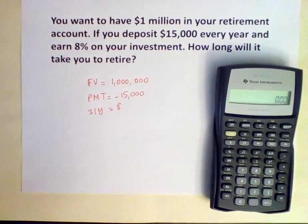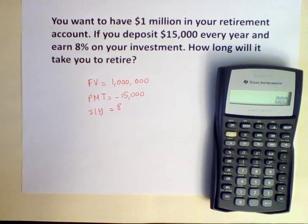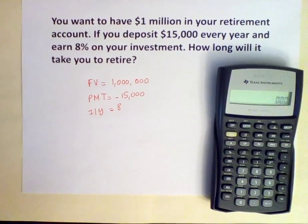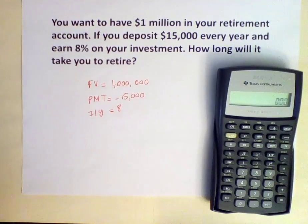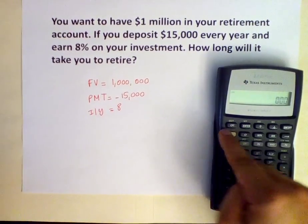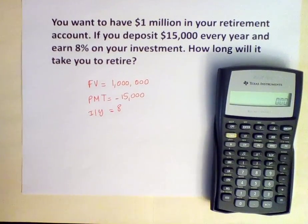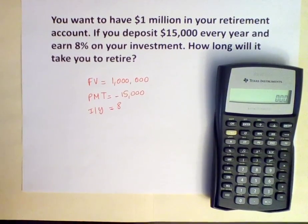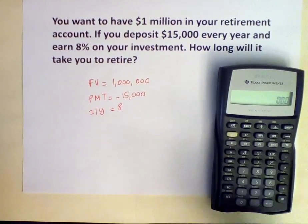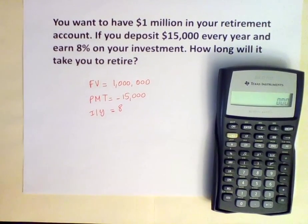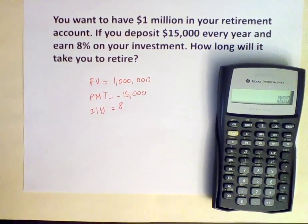Now we are ready to input the information into the financial calculator. First we need to clear our work: press Second, FV to clear all time value of money calculations that were done previously, and Second, CE to clear all work.